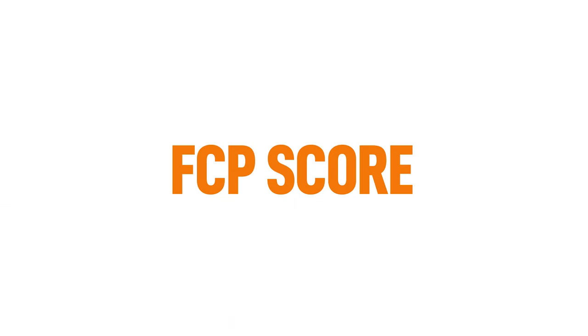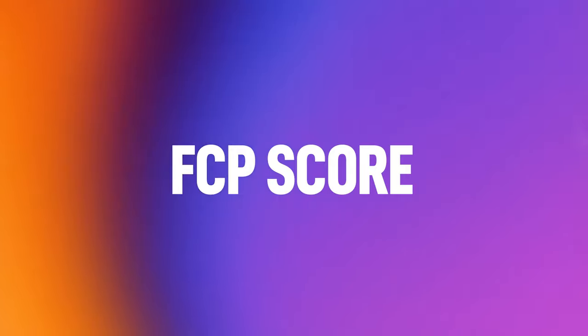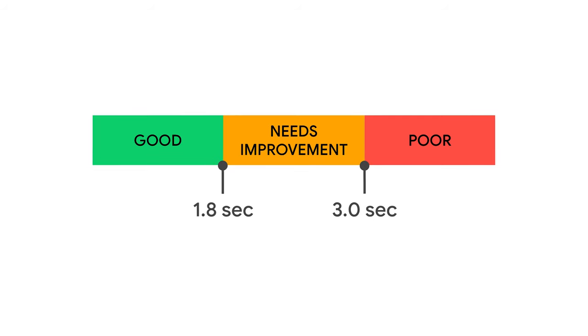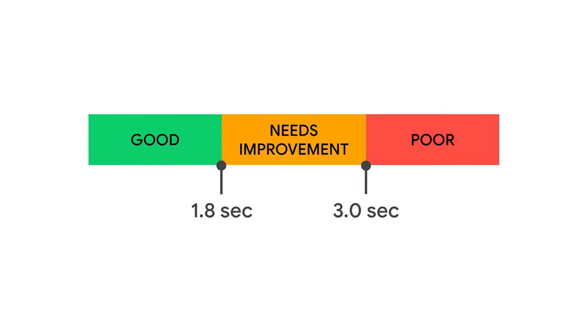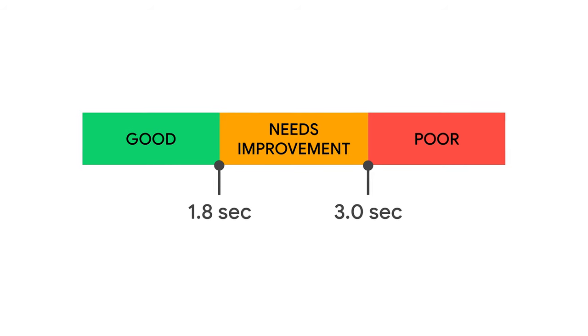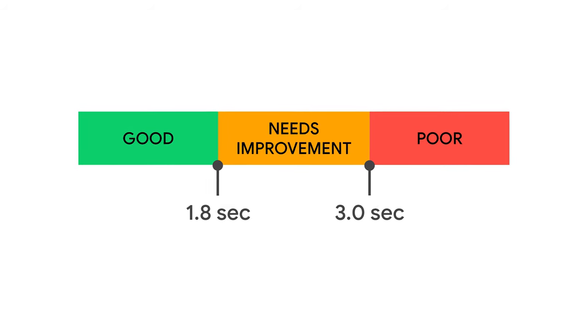What is a good FCP score? From Google's documentation, we can see that they rate FCP times in three categories: Good, Needs Improvement, and Poor, and they discuss how they achieve the percentile scoring used by their Lighthouse tool. Good is between 0 and 1.8 seconds. Needs Improvement is between 1.8 and 3 seconds, and Poor is over 3 seconds.